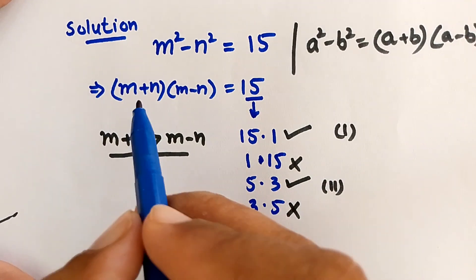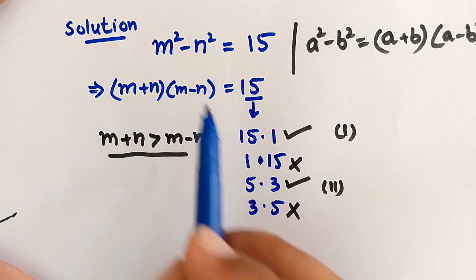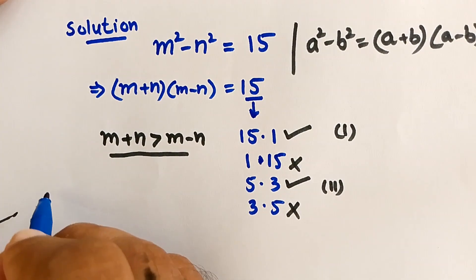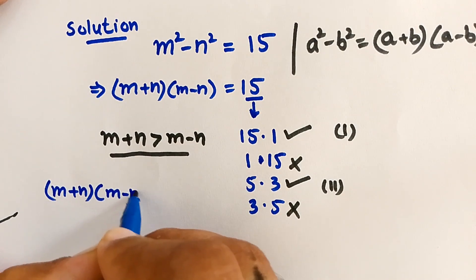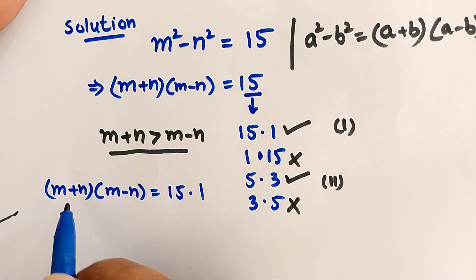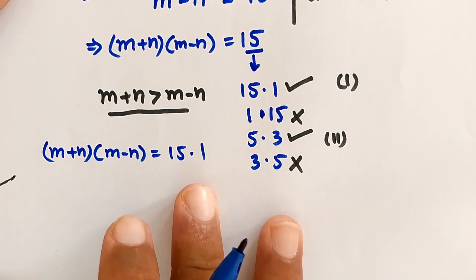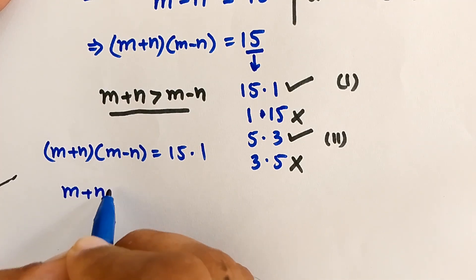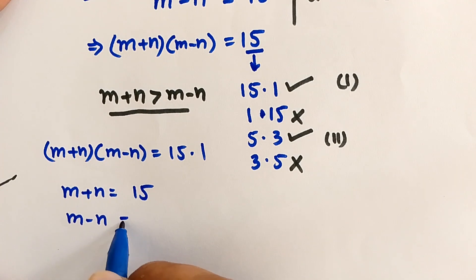For Case 1: m plus n times m minus n equals 15 times 1. This gives us two equations: m plus n is equal to 15, and m minus n is equal to 1.